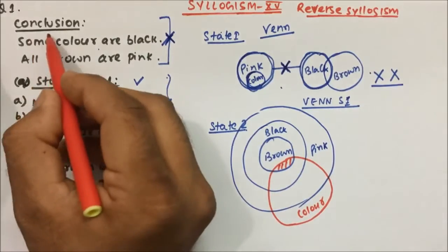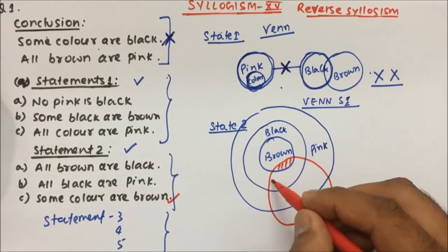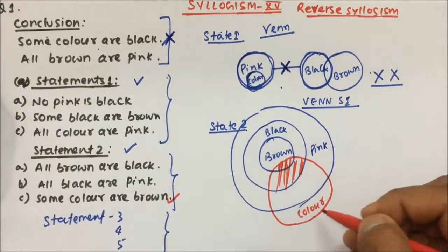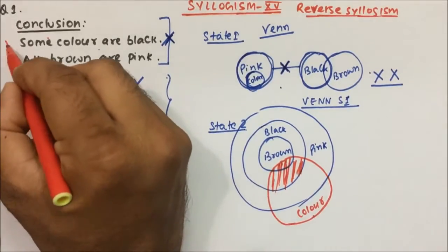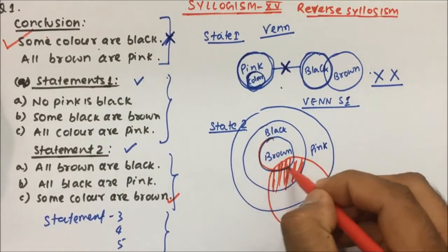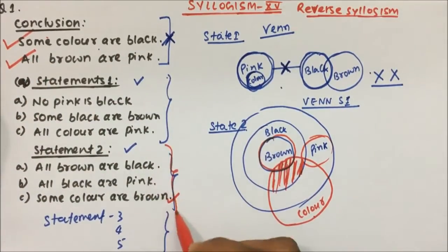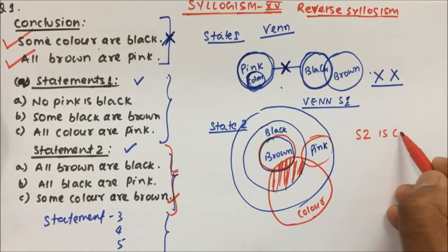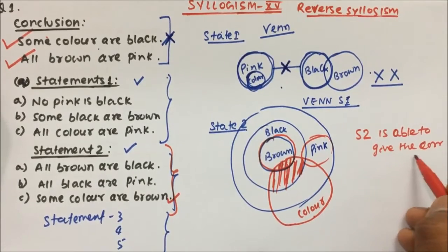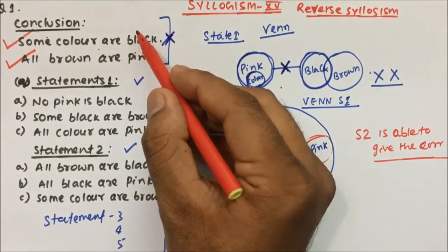Now we will try to see if conclusion 1 and conclusion 2 are true or not. Conclusion 1: some color are black. You see color is here and black is here — many portions of color and black are shared, meaning some colors are black and some black are color, which is true from the diagram. Conclusion 2: all brown are pink — you see all brown are inside pink. So conclusion 2 is also true. Therefore, statement 2 is able to give the correct answer. This is reverse syllogism — we have to tell which statement will give both conclusions as true.